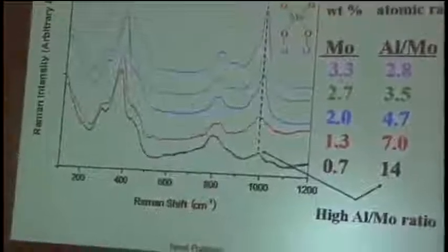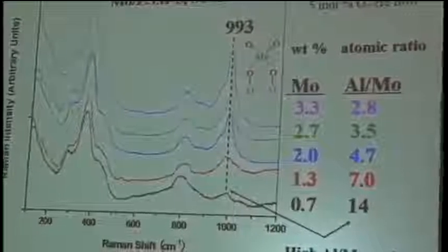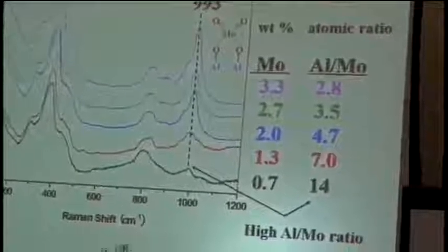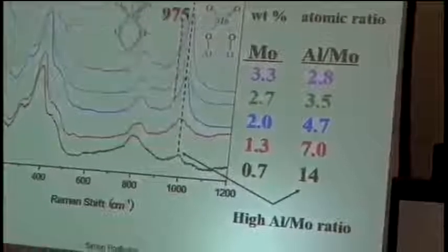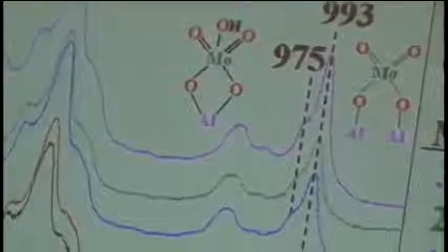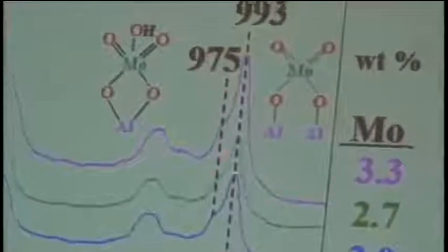So initially, we have our structure on two aluminum atoms with the Raman band at 993. Then when we start increasing the molybdenum concentration, as we're running out of those special aluminum sites where two of them are close by, so these are the preferred sites. They're occupied first.